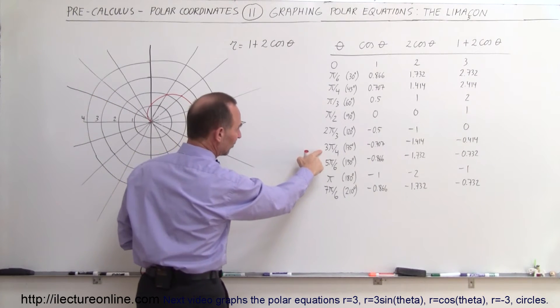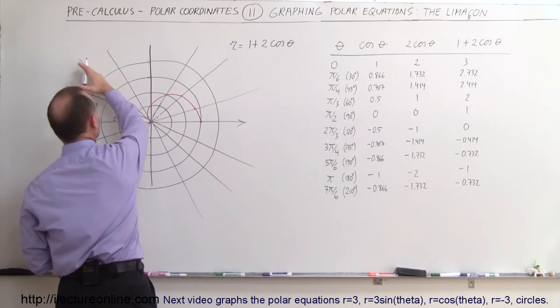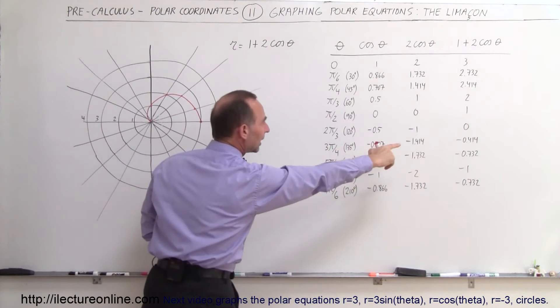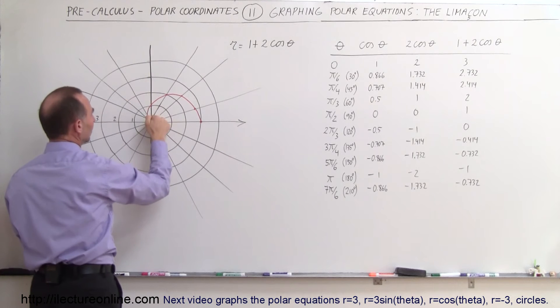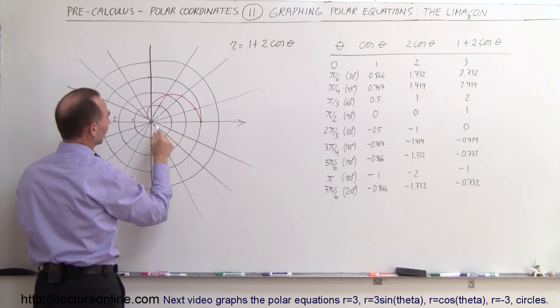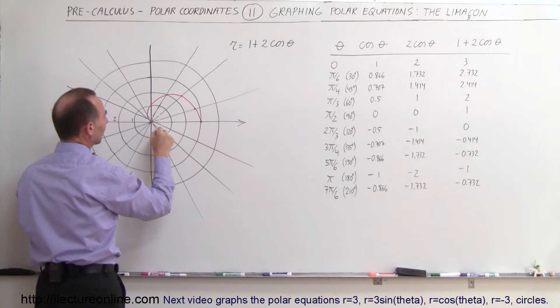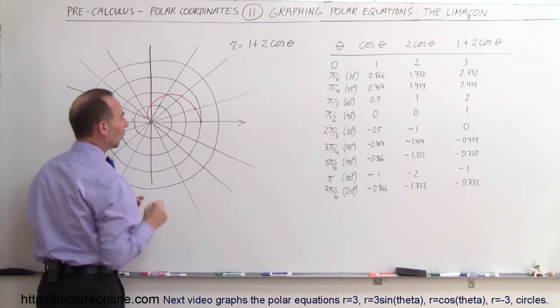At 135 degrees, which is a 45 degree angle in this direction, then we have minus 0.4. So even though we're pointing in this direction, r is negative, which puts us on the other side of the curve. That puts us right about there, not quite halfway between 0 and 1.